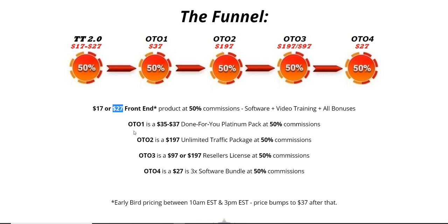OTO number two is an unlimited traffic package at $47 — I don't have full details but it will be something of high quality traffic, possibly from the vendors' sales pages. OTO number three is a reseller license — get 100% commission instead of the standard 50%. The reseller license is available at either $97 or $197, with the difference likely being the number of copies you can sell. I'd recommend waiting to see if the funnel converts before investing in the reseller license.